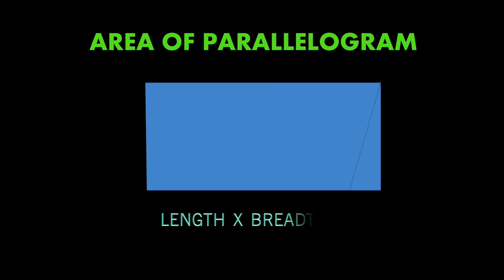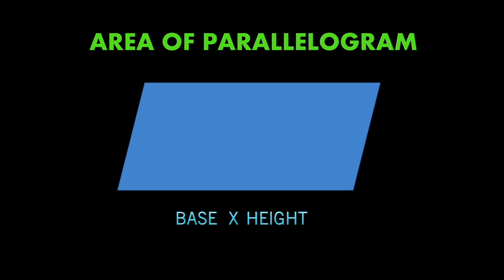Now, how do we get the area of a parallelogram? We take a rectangular part from one side of the parallelogram and add it to the other side — and we get a rectangle. We already know the area of a rectangle is length into breadth.